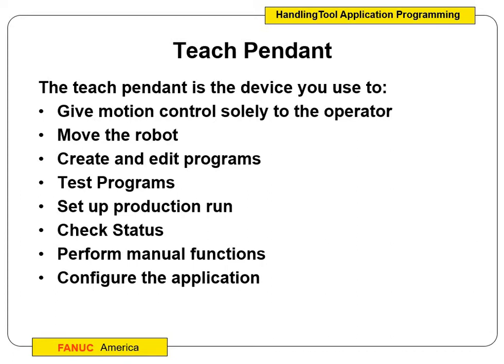Test question — the first bullet: the Teach Pendant is the device you use to give motion control solely to the operator. That's really what it's for. That's why when we talked about safety, the only person allowed to go inside the fence with the robot is the person with the Teach Pendant in hand. We also use it to move the robot — we're going to jog the robot, record points, create and edit programs, test programs, run production, do status checks, do manual functions, and configure the application. It's going to have different faces for different applications.